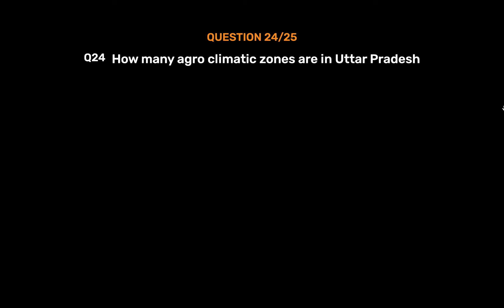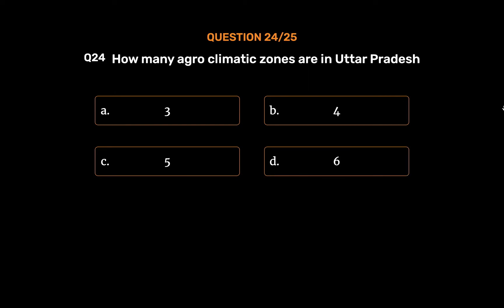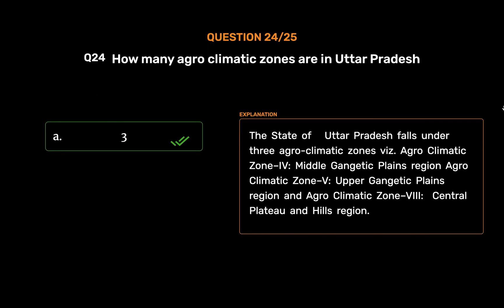Question No. 24: How many agro-climatic zones are in Uttar Pradesh? Option A: 3. Option B: 4. Option C: 5. Option D: 6. The correct answer is Option A: 3. The state of Uttar Pradesh falls under three agro-climatic zones: zone 4 (middle Gangetic Plains region), zone 5 (upper Gangetic Plains region), and zone 8 (central plateau and hills region).